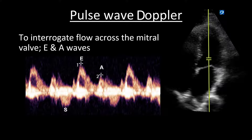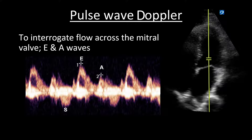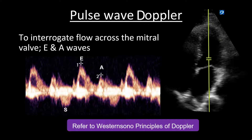To obtain the mitral valve inflow, we use pulse-wave Doppler to interrogate the flow across the mitral valve. The E and A-waves are always positive deflections seen above the baseline, as blood is moving towards the probe in diastole. To identify them, first identify the systolic flow away from the ultrasound probe — depicted as a negative deflection below the baseline, representing blood leaving the LV cavity during systole. The first positive deflection after this negative deflection is usually your E-wave. Alternatively, you can use ECG leads to help identify the phases of systole and diastole. For a refresher on Doppler principles, please refer to Western Sono.